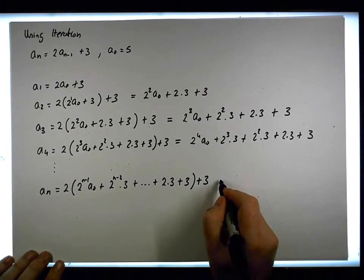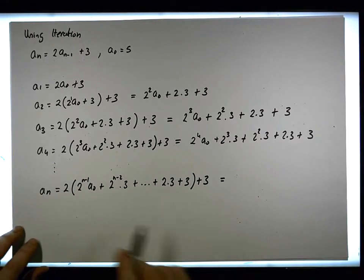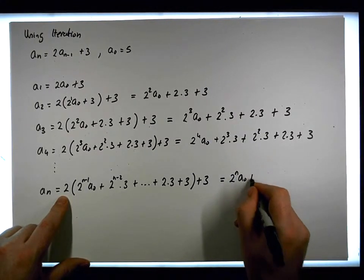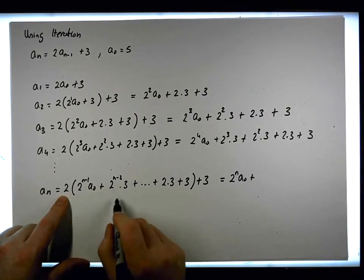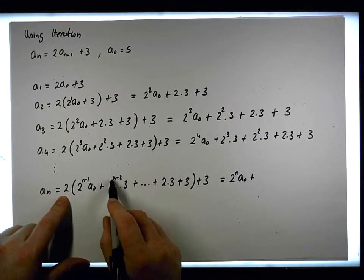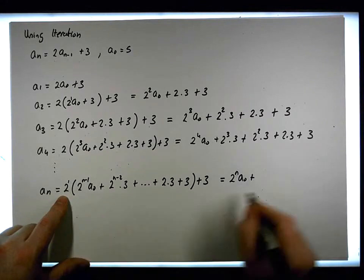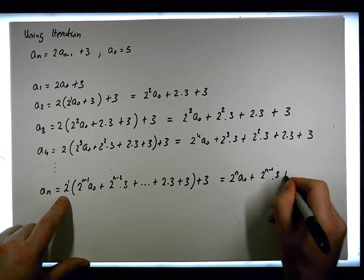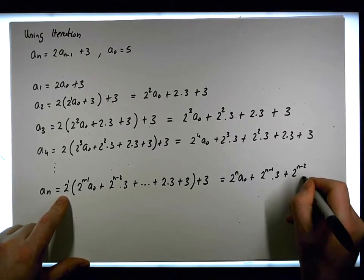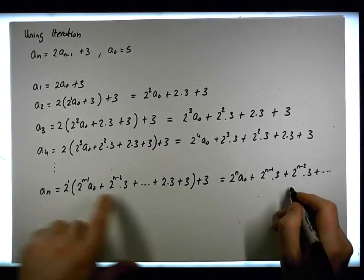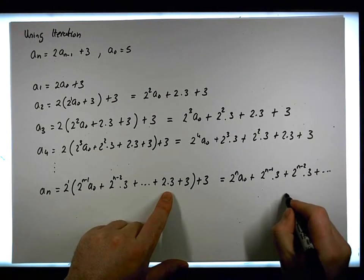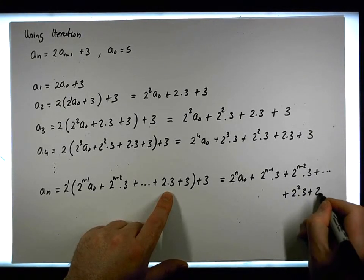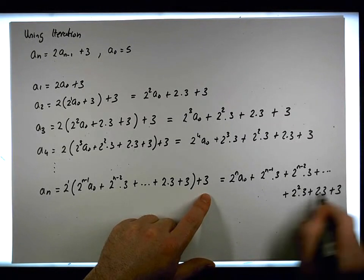Adding on the 3 and multiplying out: 2 times 2^(n-1) is 2^n, so we get a_n = 2^n·a_0 plus 2^(n-1)·3 plus 2^(n-2)·3, all the way down to 2 squared times 3 plus 2 times 3 plus 3.